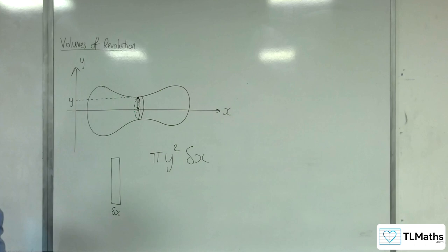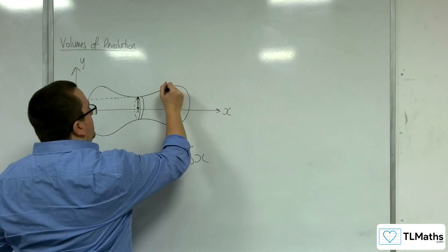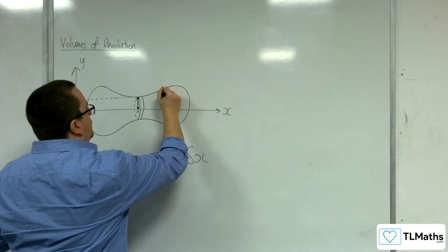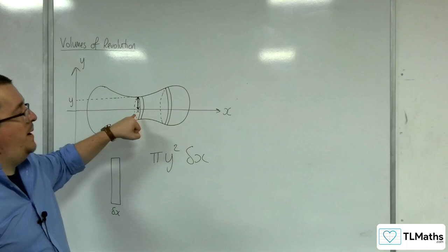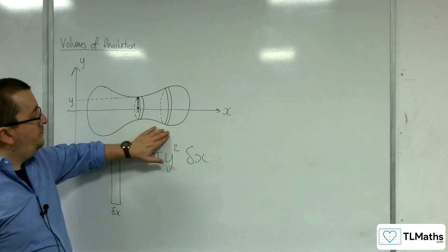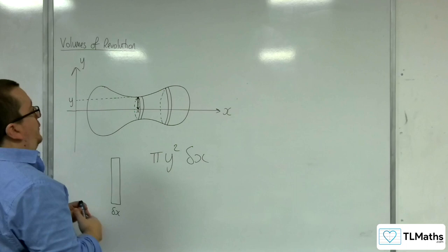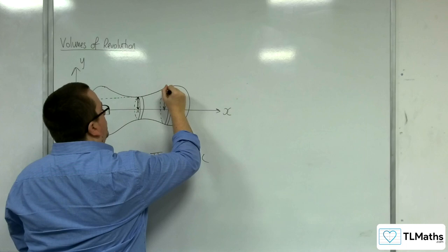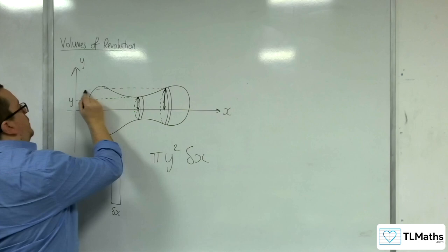Now, if I did that all the way along the shape, so let's say I took another cut, and I took the cut here. So I've got another slice. Now, this slice is clearly bigger than that slice. But let's say I take it a very thin slice, so it's delta x again in thickness. But the radius is, of course, different than it was before. And so, the radius here, that length there, is now given by whatever the y value is for that value of x.